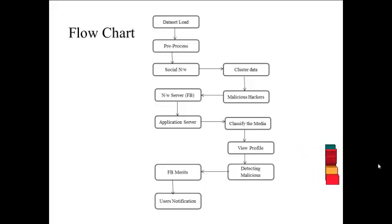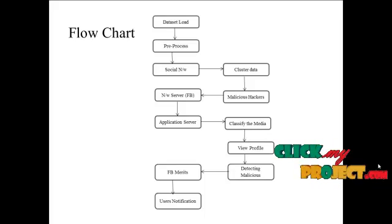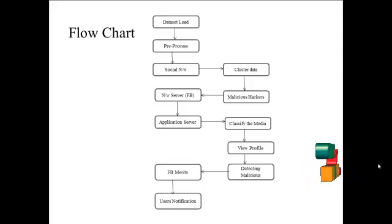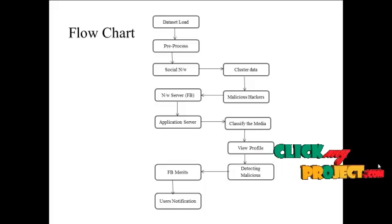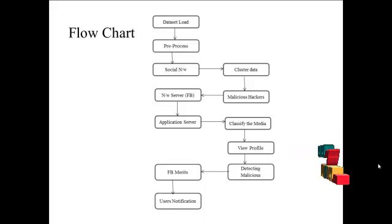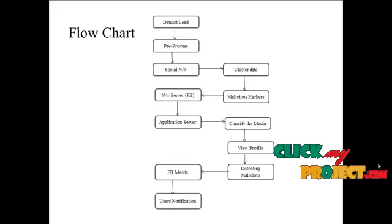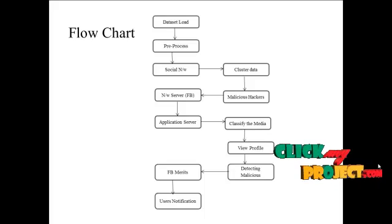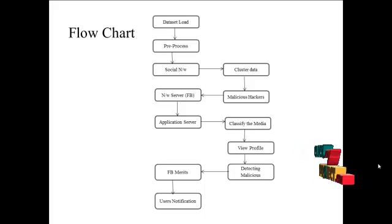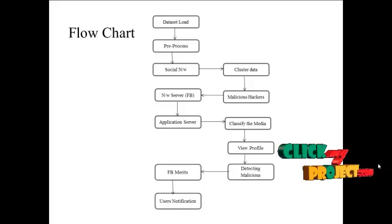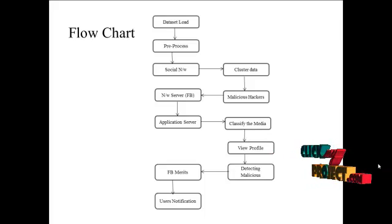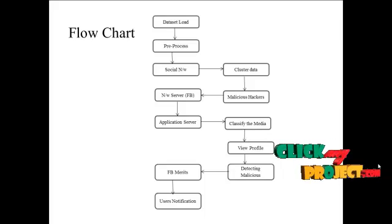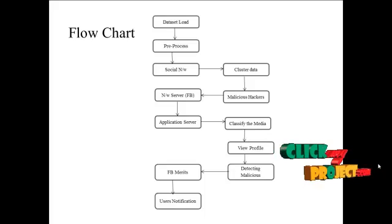All social network data is stored on the Facebook servers — Facebook servers are the application storage. When we browse only Facebook, the data is stored into the Facebook servers. Next, the data comes to the application server, where the user's details are processed and stored based on certain applications. Next, the data will be classified based on the media. These applications allow hackers to easily access personal details.